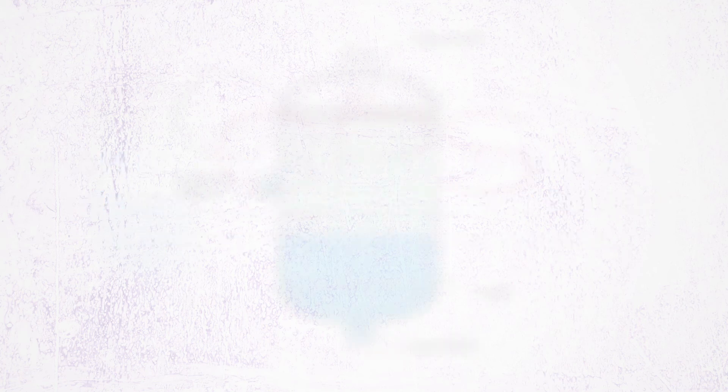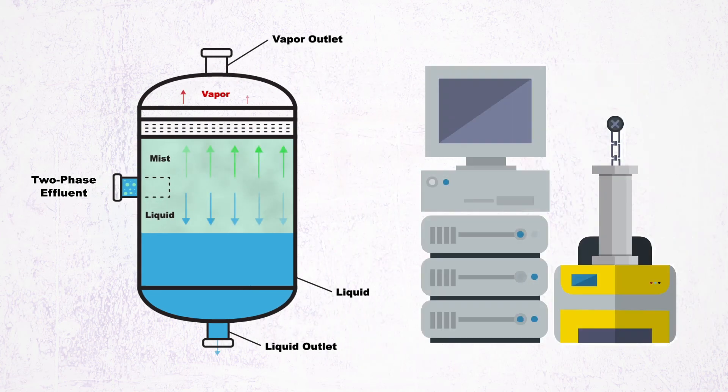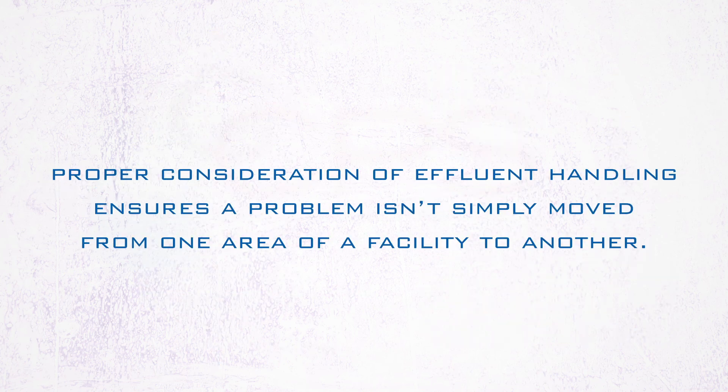As illustrated in this video, a knockout tank is an important component of a properly designed emergency relief system. Sizing relief devices and associated piping is an important first step, but proper consideration of effluent handling ensures a problem isn't simply moved from one area of a facility to another.